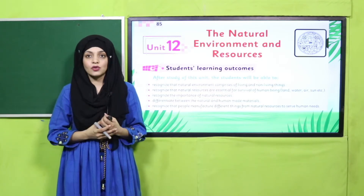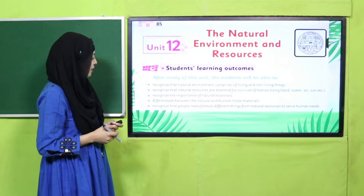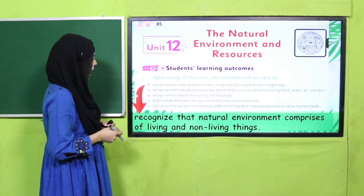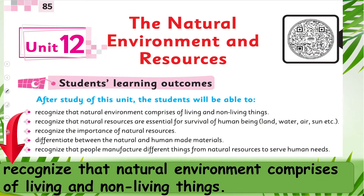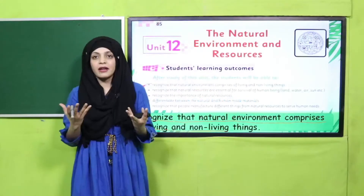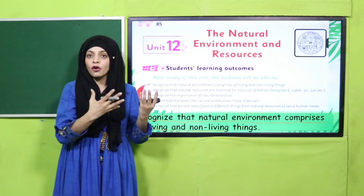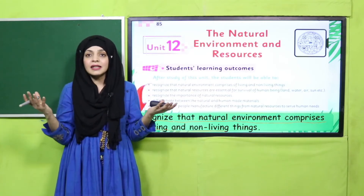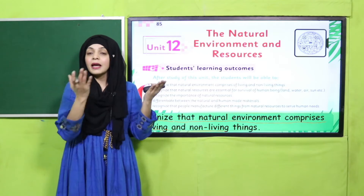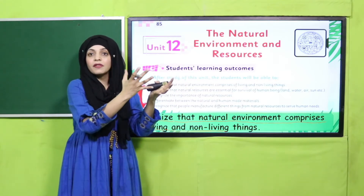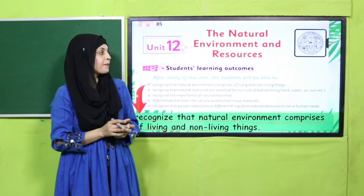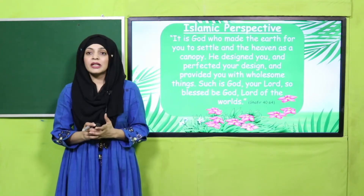Now let's have a look at the student learning outcome on page number 85. By the end of today's lesson, all students will be able to recognize that the natural environment comprises both living and non-living things. All natural environments — like forests, rivers, and deserts — are collectively made up of living and non-living things.